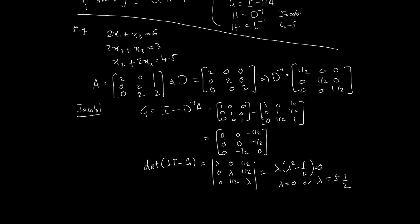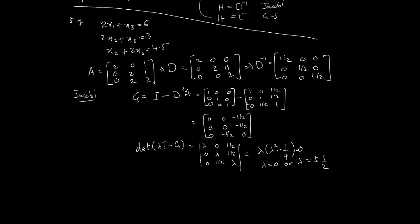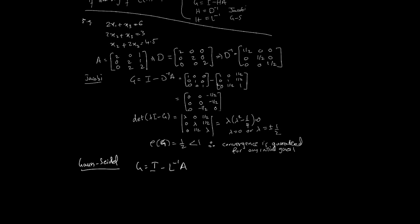This tells us very clearly that the spectral radius of G is 1/2 — that's the largest absolute eigenvalue of the matrix G. Since 1/2 is less than 1, convergence is guaranteed for any initial guess.